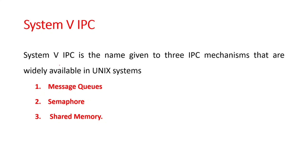Welcome back everyone to a session on UNIX programming. In this session, we will look into the various System 5 IPC methods. System 5 IPC is the name given to three IPC mechanisms that are widely available in the UNIX operating system: message queues, semaphores, and shared memory. We will look at each one of these IPC methods in detail in upcoming videos, but for today we will look at the common features among all three.